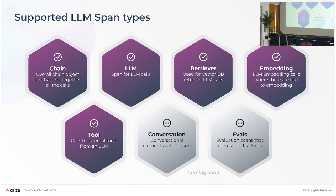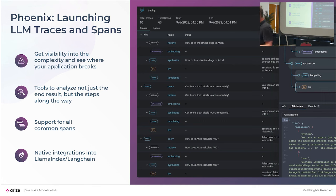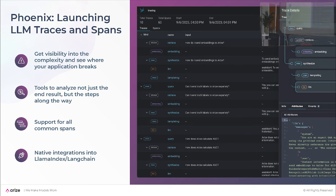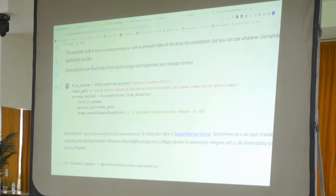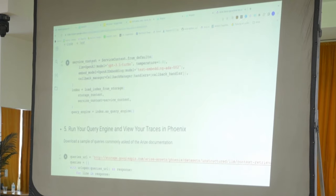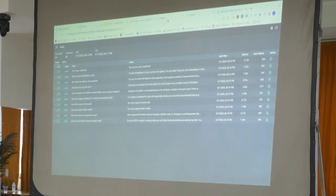So what am I going to show you tonight and what are we launching? We have traces in Phoenix. This is for developers building in LlamaIndex or LangChain. It's open source, so you don't have to worry about where you're sending your data to or from. It works locally where you're running it. You can troubleshoot your spans and traces under the hood with a click of a button.